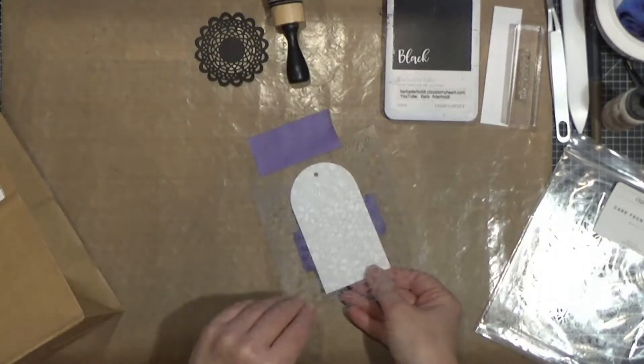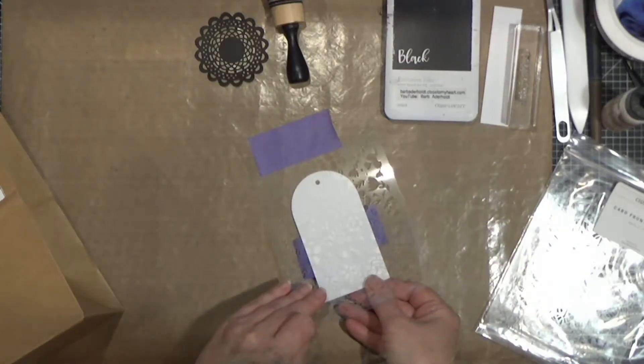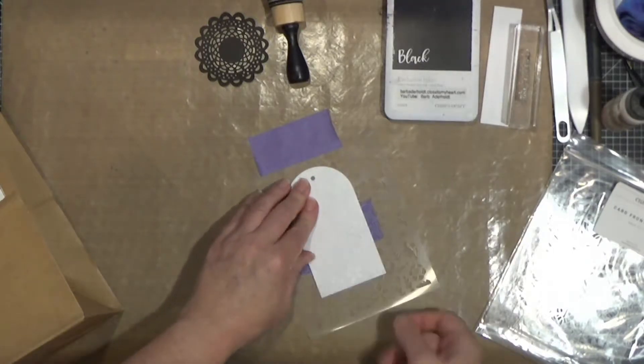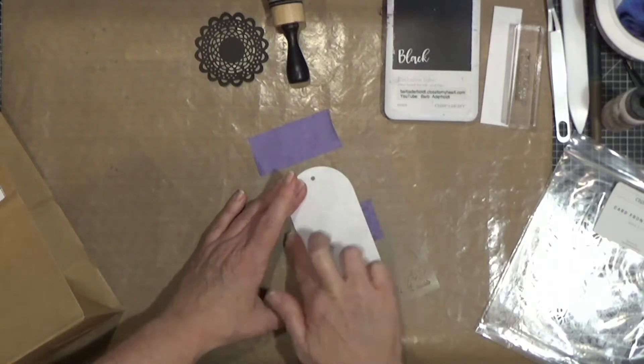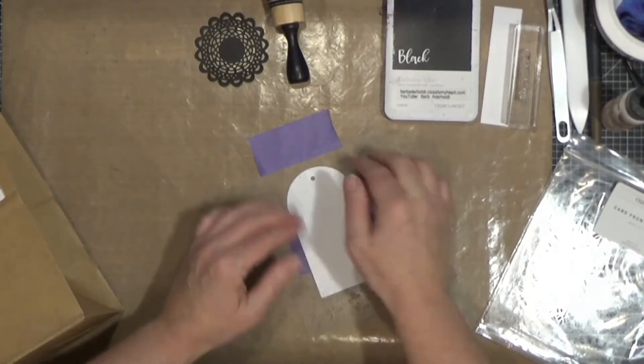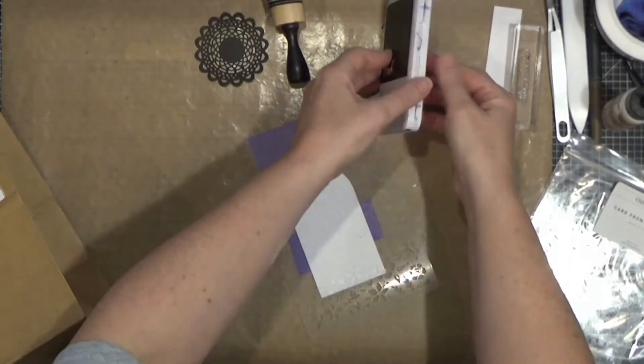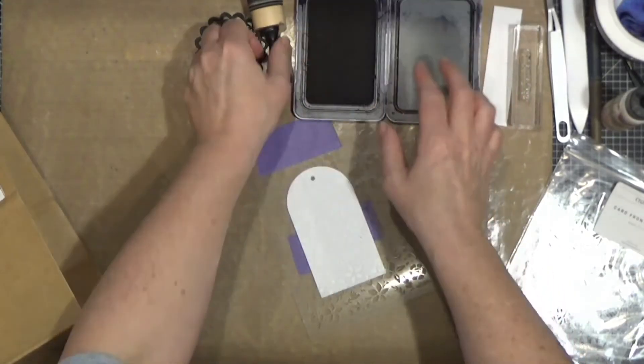And I'm going to put this under here, get it lined up where I want it. And then I'm going to push it down so that that tape attaches my tag to the stencil so that it doesn't wiggle around as I vigorously go about ink blending.